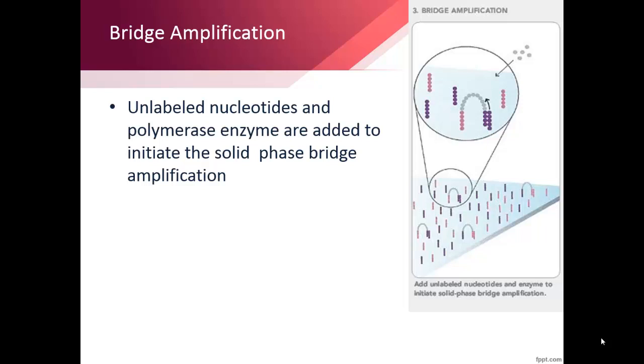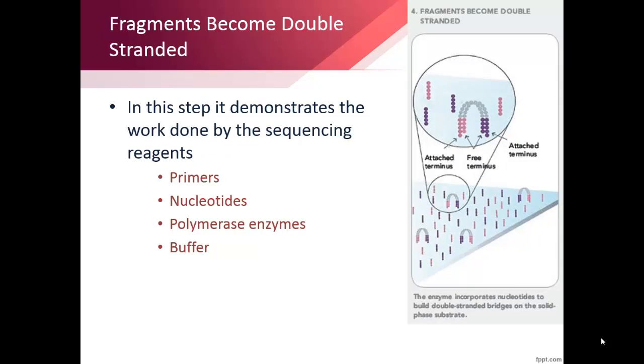Unlabeled nucleotides and polymerase enzyme are added to initiate the solid phase bridge amplification. The reagents needed to sequence are added, such as primers to start the sequencing, nucleotides to form the new sequence, polymerase to sequence the nucleotides together, and buffer to keep the pH at an optimum level for enzymatic reaction.